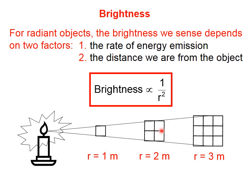If we continue following that bit of light to a distance of 3 meters, we can see that that light is spread over a yet larger area, 3 times 3. So we can see that the brightness or the intensity of light is inversely proportional to the square of the distance from the source.